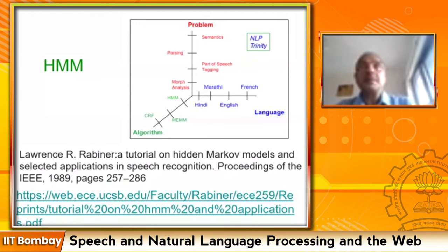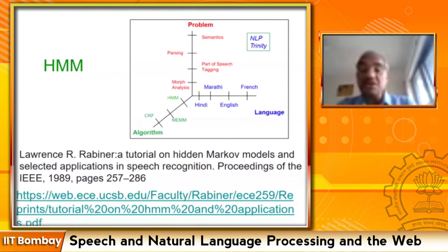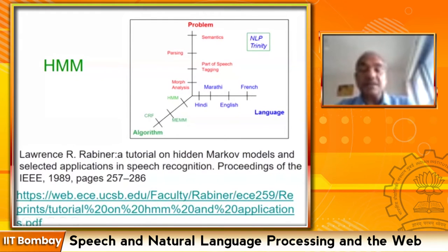Why did this paper stay so long while many papers come and go? This paper stayed because it tackled foundational questions — foundational issues which are required by every generation. That is why this paper endures, and it is an excellent discourse on hidden Markov models.